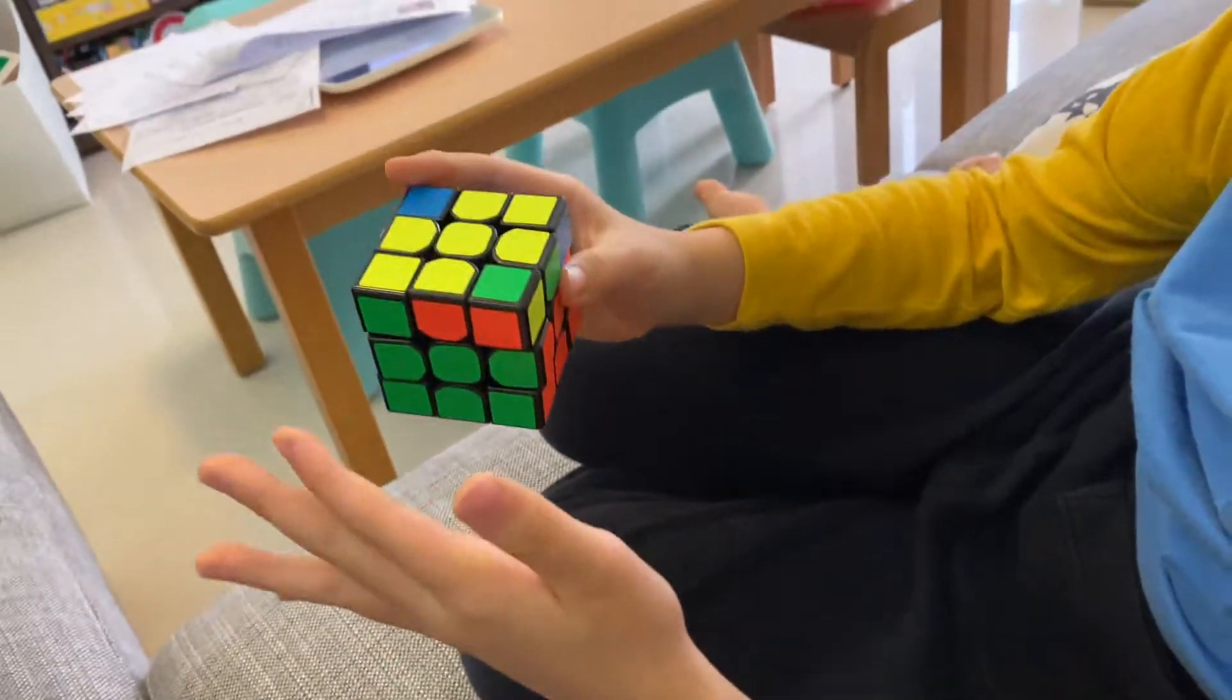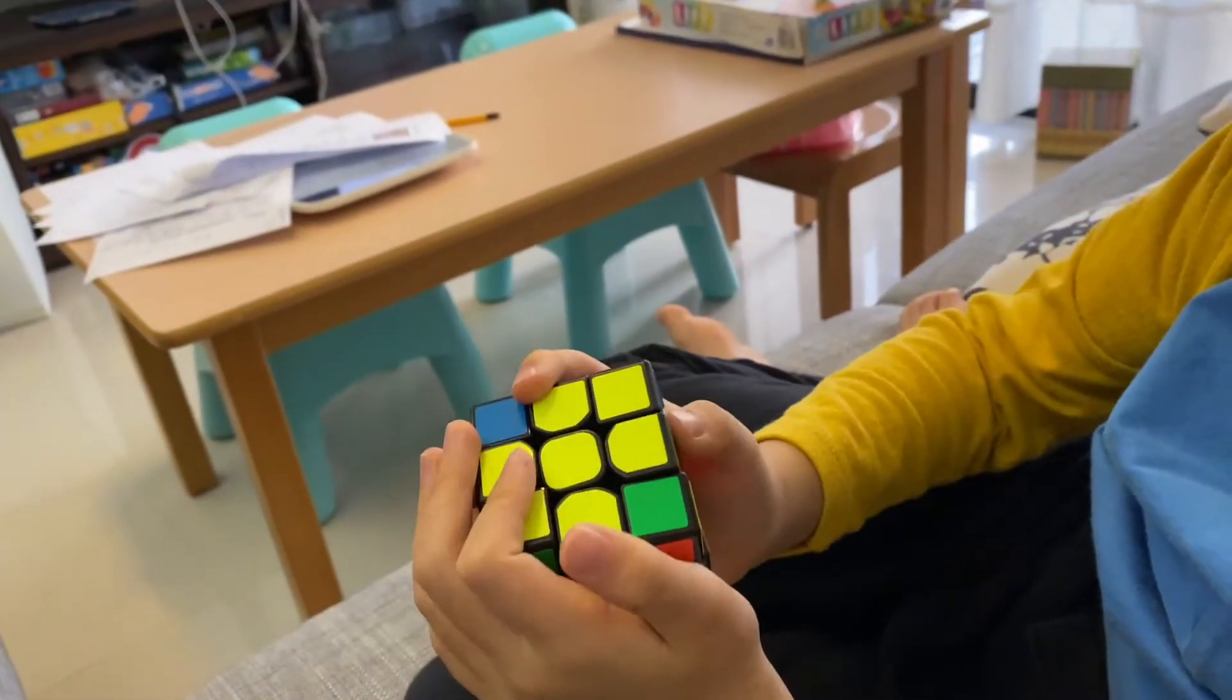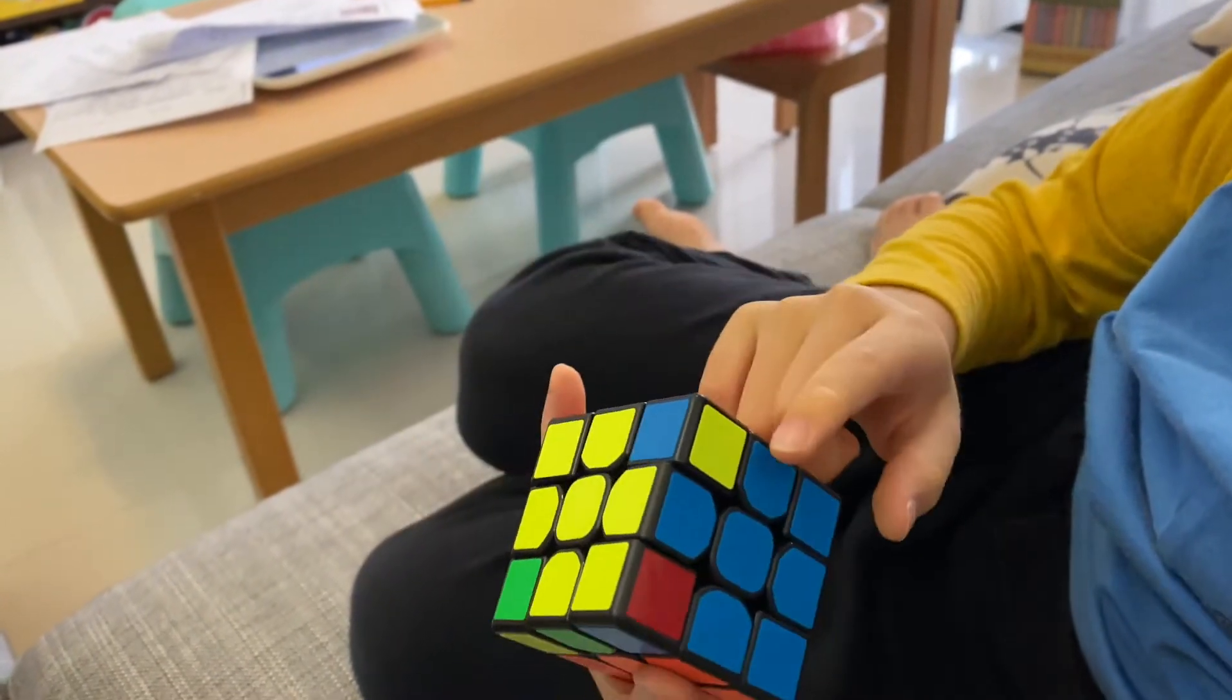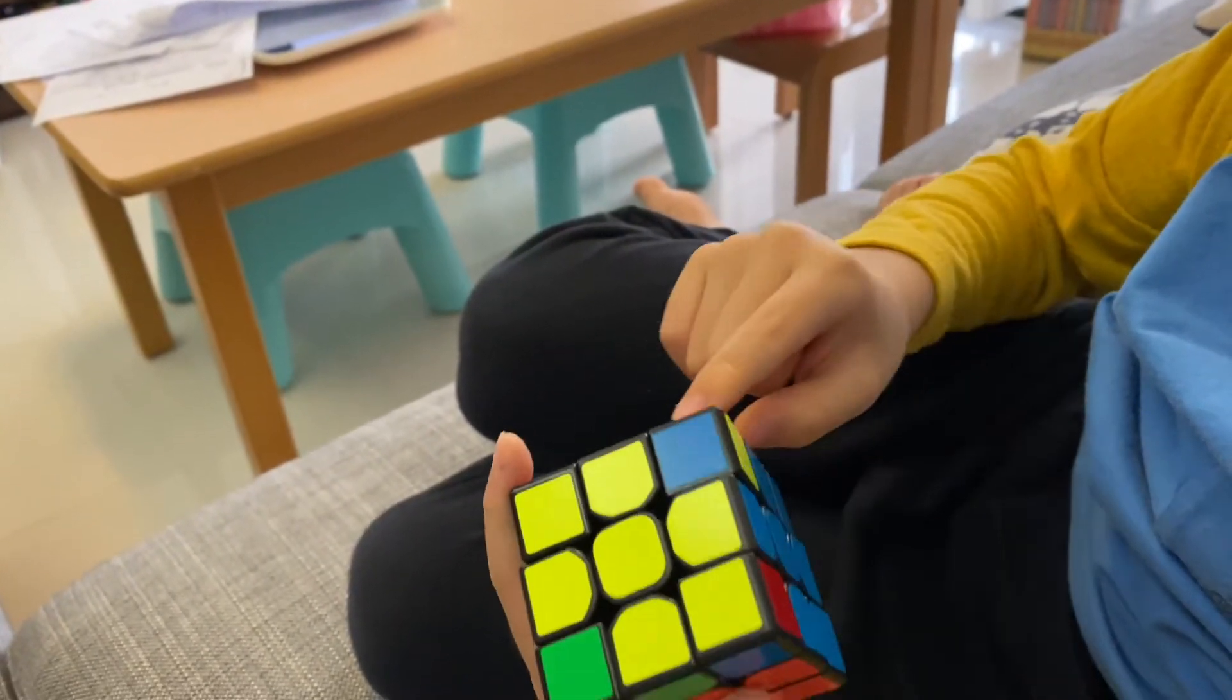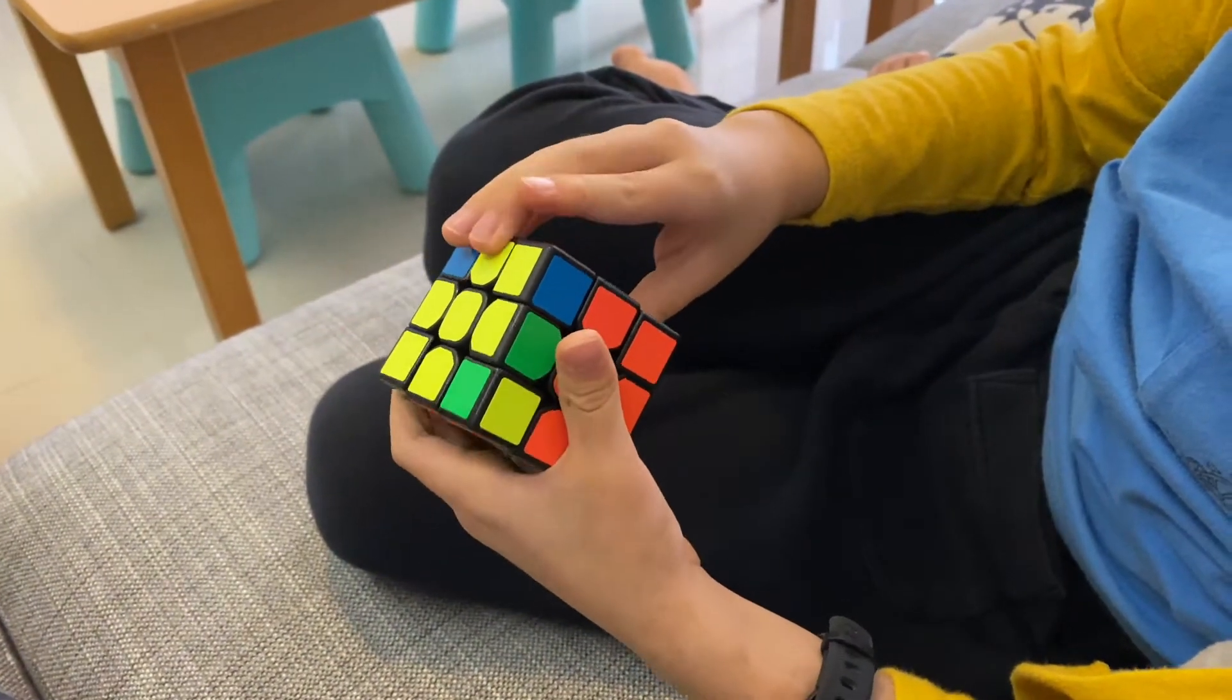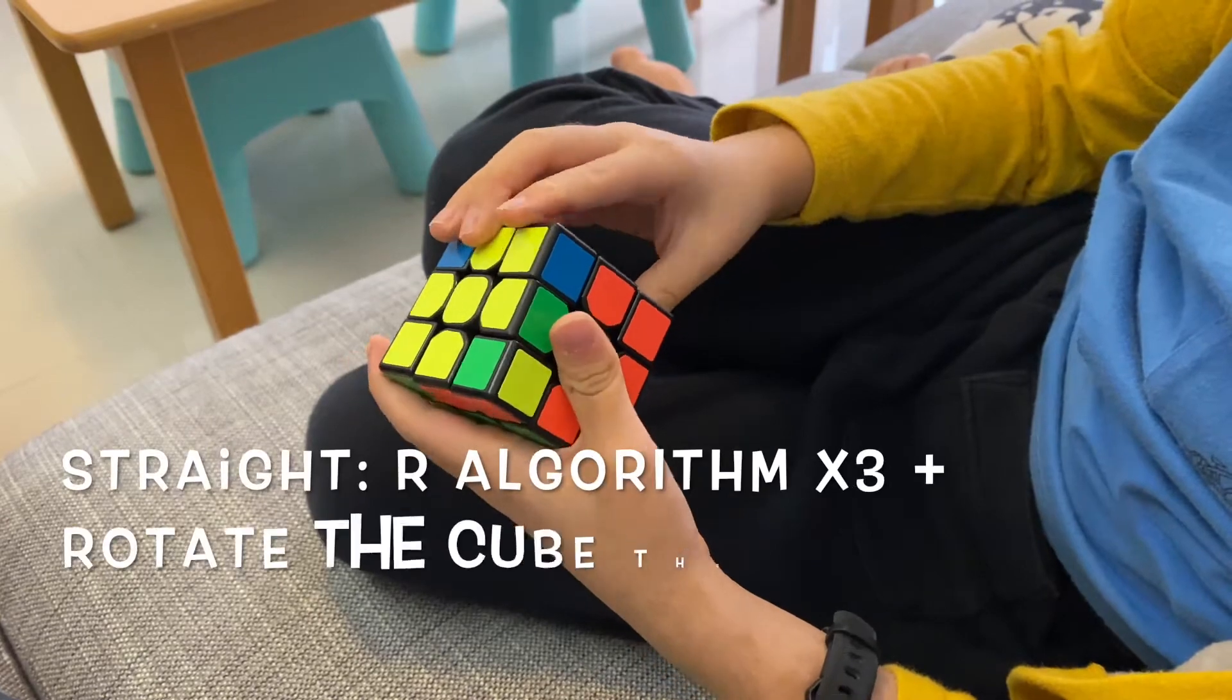So we know that these two are correct. We keep them on the left side. Now you see that the other ones are incorrect. When we do this algorithm, it will turn them into correct. How to do it is kind of the same.